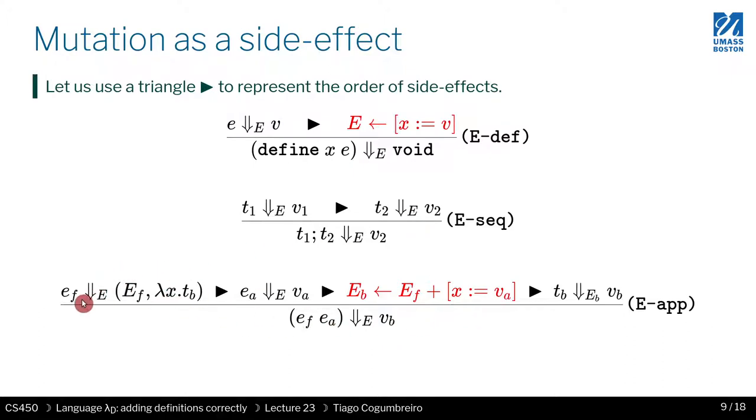And then application, again, this all matters. So you have to first evaluate the function, then the argument, and then you create the new environment, followed by evaluating the body of the lambda. If you flip any of these orders or you reordered it in any way, you will not get 100% on this homework assignment, because there are some edge cases that trigger or that are very sensitive to the order in which you evaluate things.